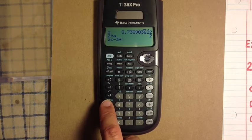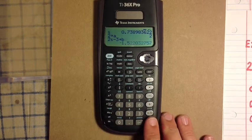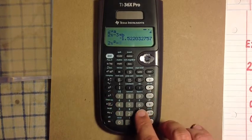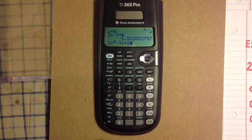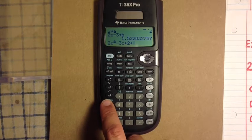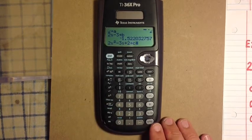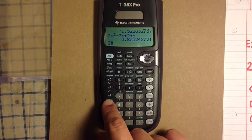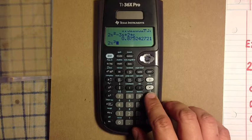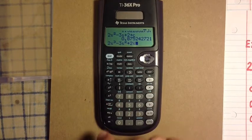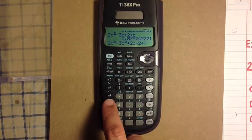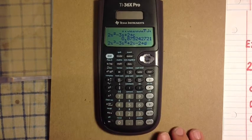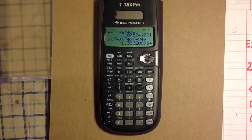Now for C, which is 2x squared minus 3x plus 2. Store, variable key 7 times, hit enter. Last one for D: 2x cubed minus 3x squared plus 2x minus 2. Store, variable key 8 times. And now we have A, B, C, and D stored.